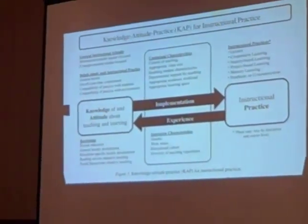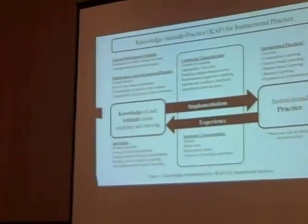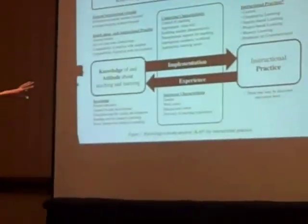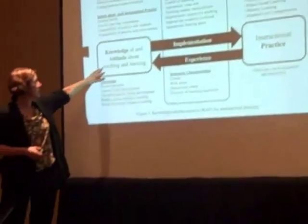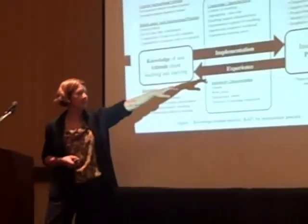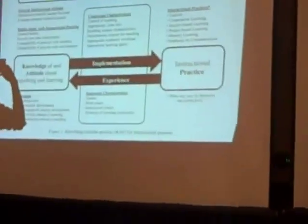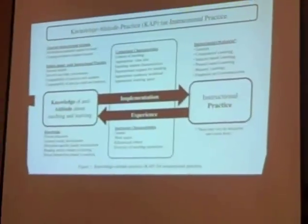This is one where I warned you if you sat in the back — there's no big way to get this on the screen. But I'll walk you through a couple of parts of this diagram. We have knowledge and attitude about teaching and learning for any particular practice, and if we implement that, it becomes instructional practice. But our instructional practice also feeds back on what we believe about that practice. For example, an instructor tries group learning once, students say they just want lecture, and so the instructor cycles back to an unfavorable attitude. So these two things are very closely related.